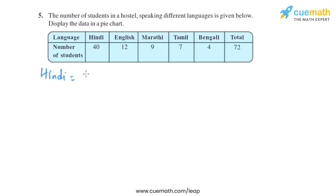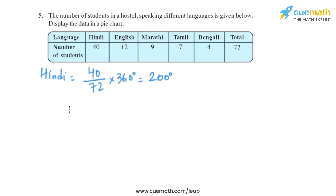Let's start with Hindi. The number of students who speak Hindi is 40 out of 72, multiplied by 360 degrees. On solving this, we get 200 degrees. So the central angle of Hindi is 200 degrees.